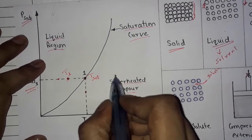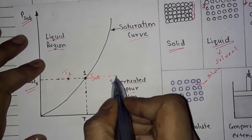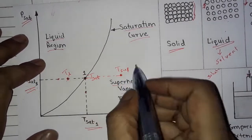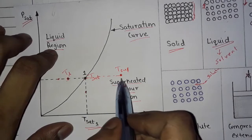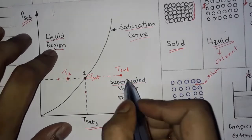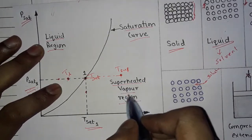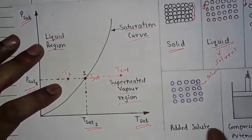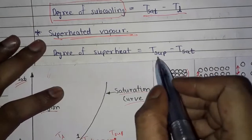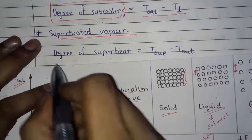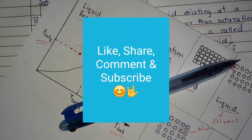Next is superheated vapor. In the graph, superheated vapor lies in the superheated vapor region. If we increase the temperature up to that point, it becomes superheated vapor. The difference between the superheated vapor temperature and the saturation temperature is called the degree of superheat. Thank you friends for watching this video — like, share, and comment, and subscribe to my channel.